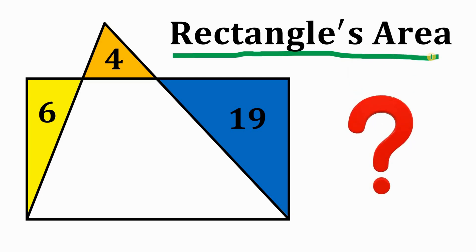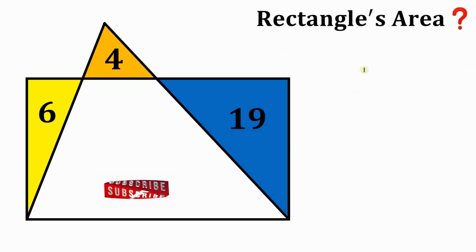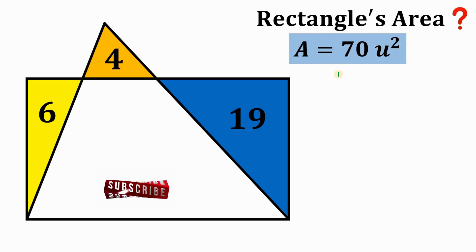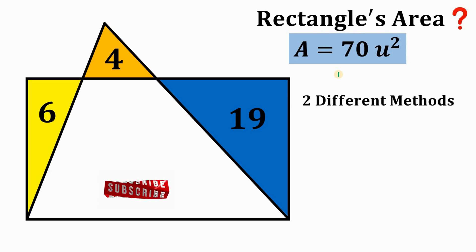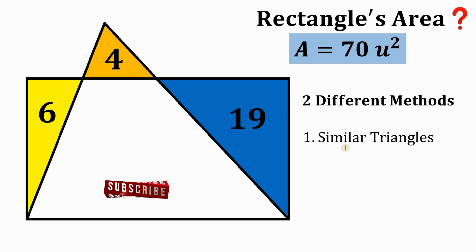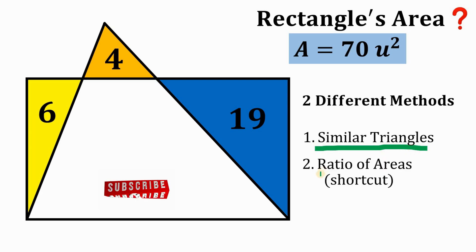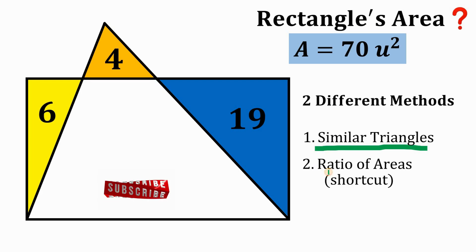Before I show you the solution, I will begin with the answer. The answer to this question is 70 square units. In this video, I will provide two different methods: the first one is by using similar triangles, and the second one is a shortcut using the ratio of areas — but in this shortcut there are a lot of concepts inside of it.